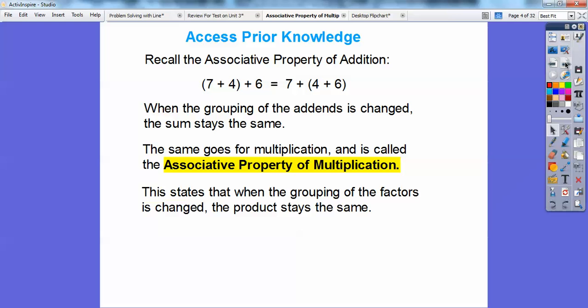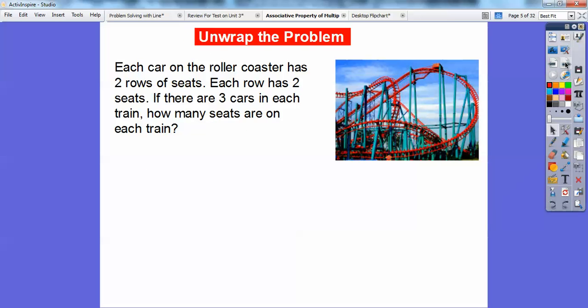Well, the same goes for multiplication, and it's called the associative property of multiplication. So I can multiply numbers and regroup them to multiply other numbers first. So this states that when grouping the factors is changed, the product will stay the same.